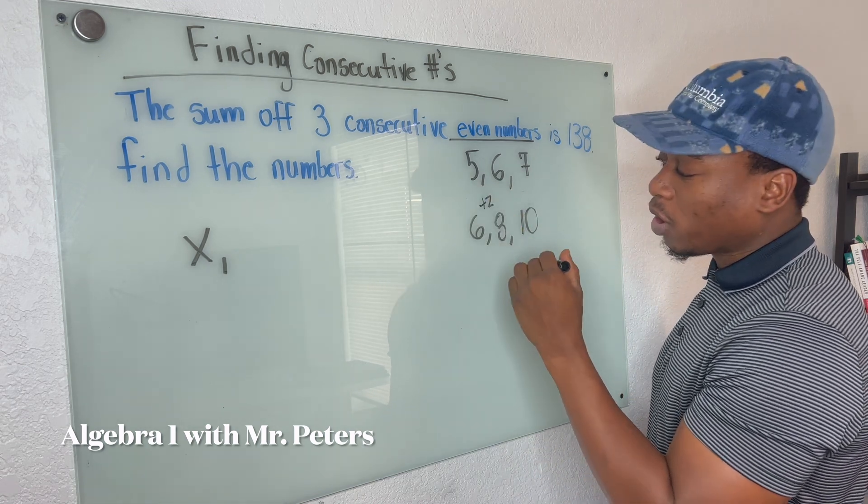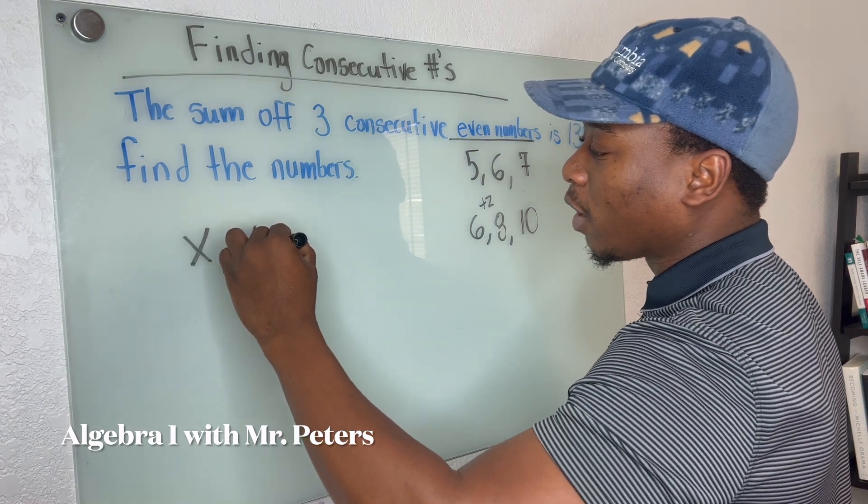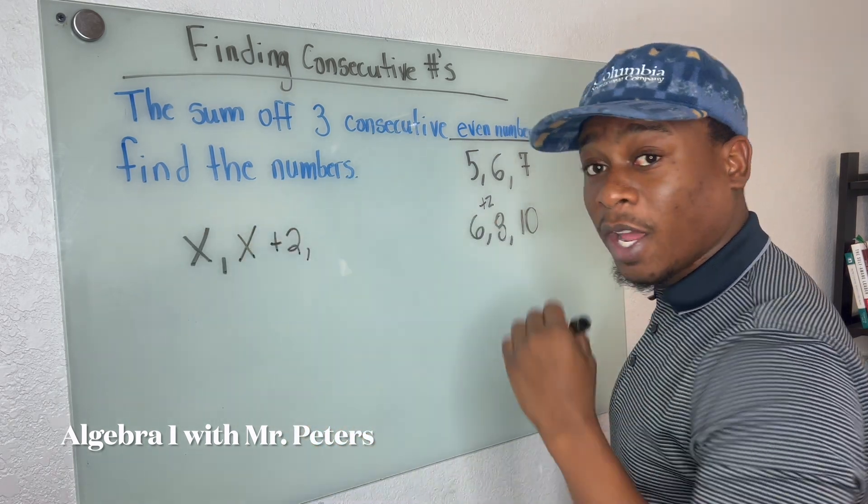So we skip over seven and get to eight. So we know the next term is going to be x plus two. That's the next even number.